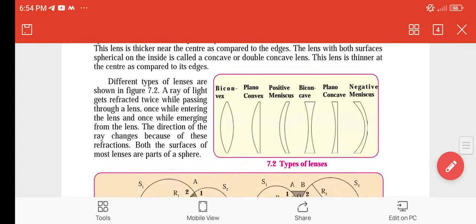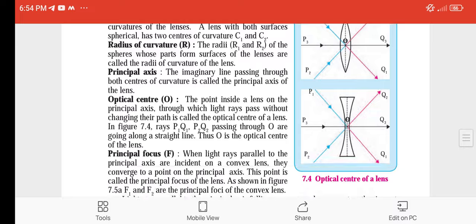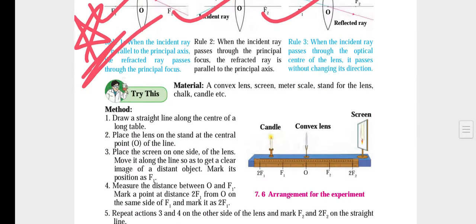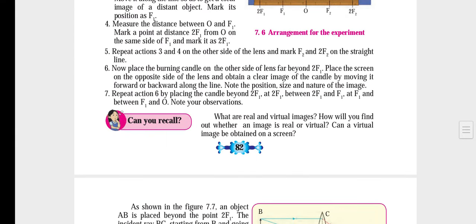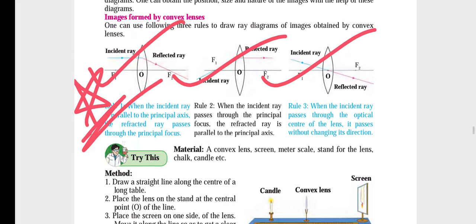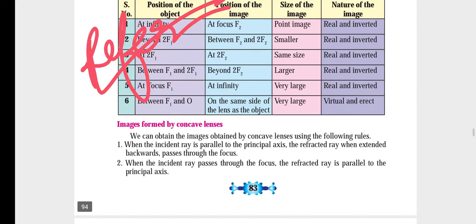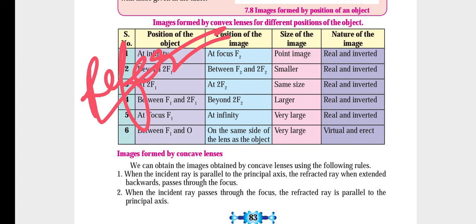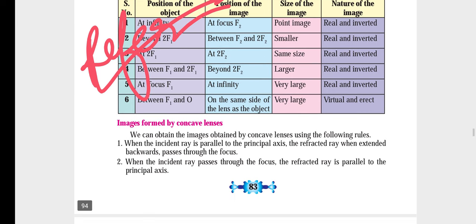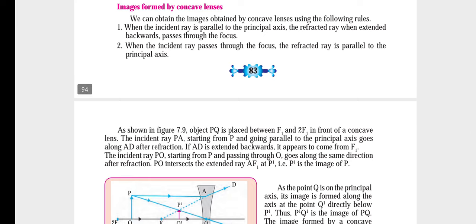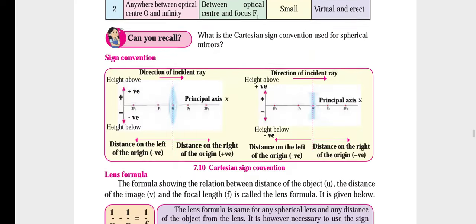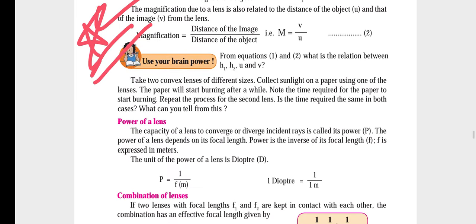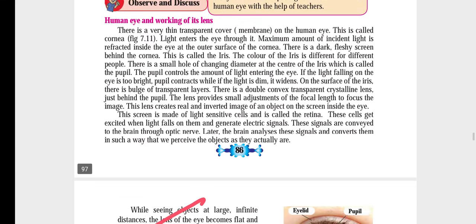We have a new chapter called Lens. What we are going to mark is images formed by convex lens — see page number 82. Images formed by convex lens: three important images. After that, page number 83 — we have the full box with positions: at infinity, at 2F1, between F1 and 2F1, at focus, between F1 and 0 — you need to box that.